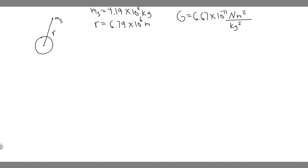They also give us the mass of the space station, which is 4.19 times 10 to the 5 kilograms. They don't give us the mass of the Earth, but that's something you need to know in order to solve this problem. ME, the mass of the Earth, equals 5.98 times 10 to the 24 kilograms — just something you have to memorize for these problems. So this is basically the information we're given.